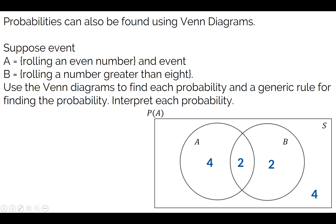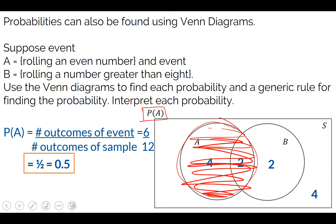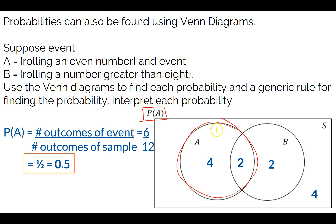So the first probability it's asking of me is the probability of just circle A. Did we already do that? What is in circle A — it includes everything in circle A. Probability of circle A is the 6 over the 12. Probability of A means the probability of getting an even number, including all of circle A. Which we already knew — it was 0.5.